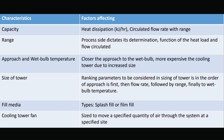Factors affecting cooling tower performance: capacity-affecting parameters are heat dissipation and circulated flow rate with range. The process side dictates range determination — it is a function of heat load and flow circulated. For approach and wet bulb temperature, the closer the approach to the wet bulb, the more expensive the cooling tower due to increased size. Ranking parameters for sizing a tower in order of importance: approach first, then flow rate, followed by range, and finally wet bulb temperature. Fill media types (splash fill or film fill) and cooling tower fan size to move a specified quantity of air also affect performance.